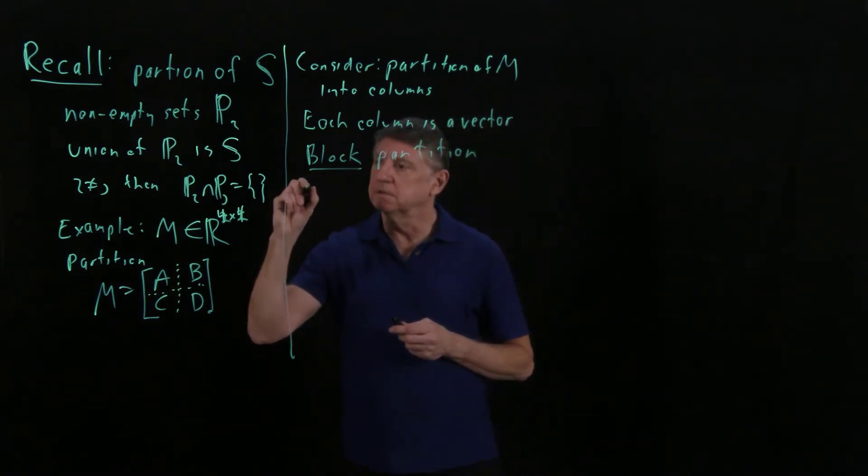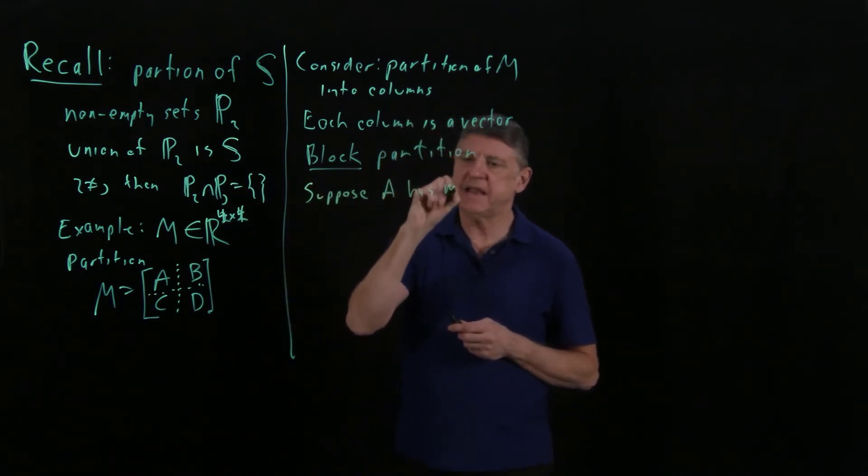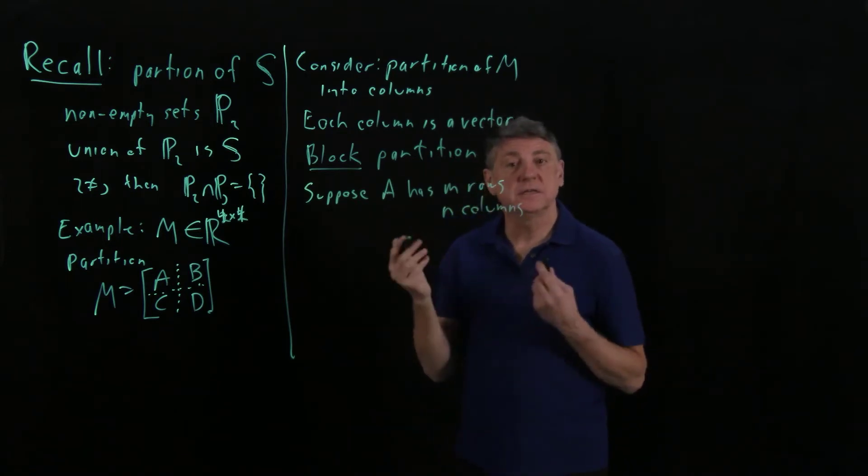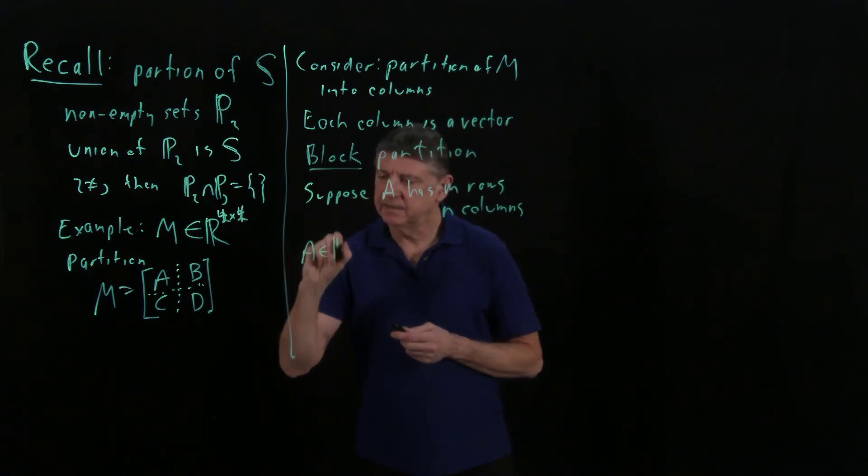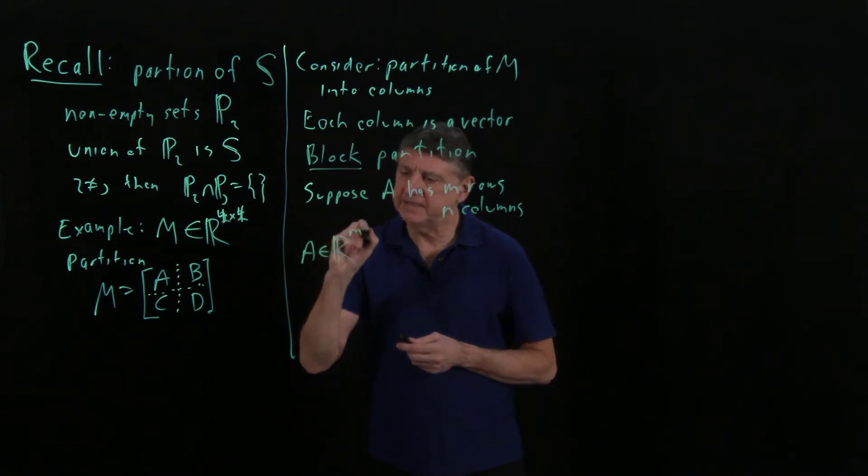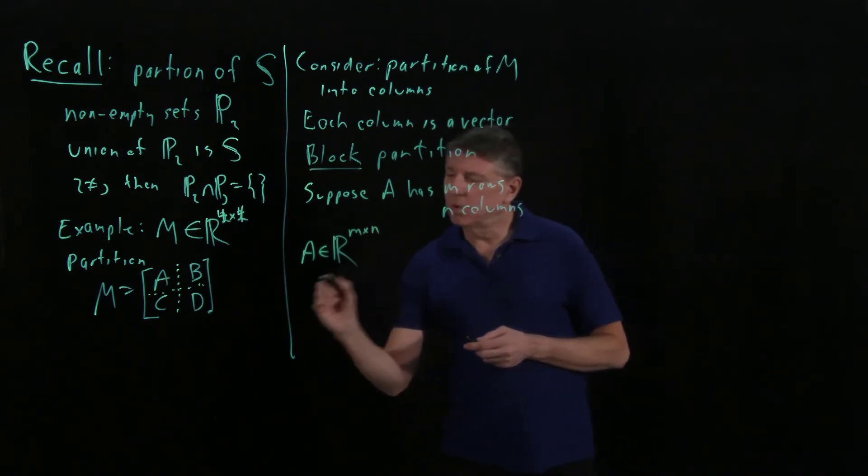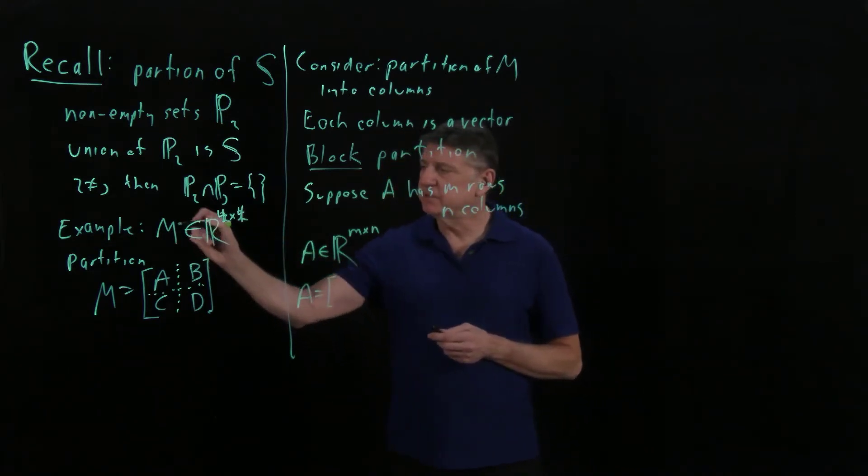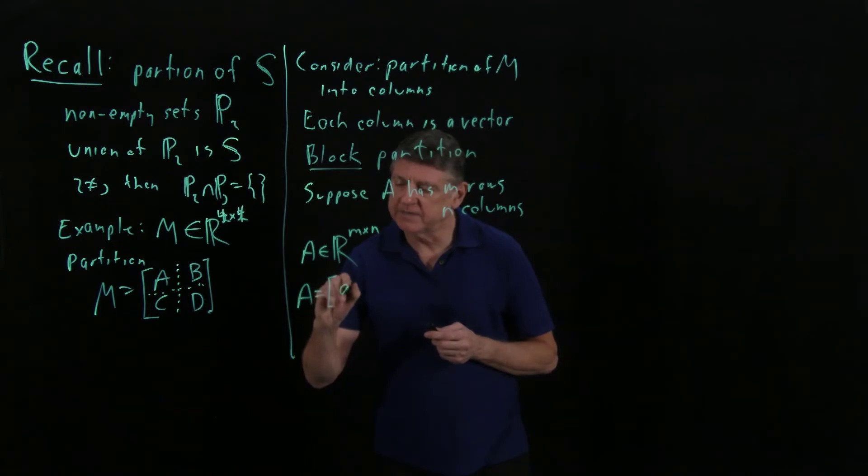So let's suppose, for example, a matrix A has M rows and N columns. And this will be a very typical example that we'll use a lot. So what we'll say is that A has real entries, and it has M rows and N columns. And what we want to do is say that A can be partitioned. What is that first column? Well, that first column is a vector, and I could write that as lowercase a vector, and I'll say that's column one.